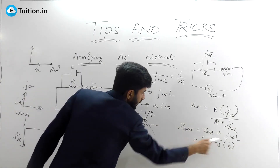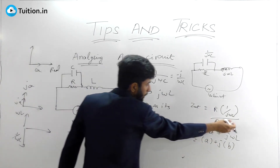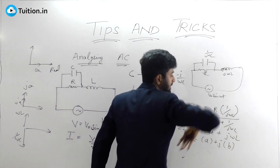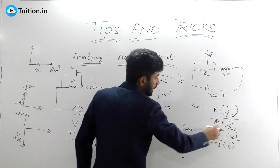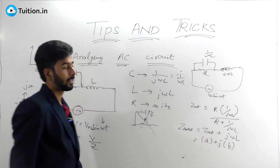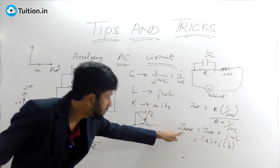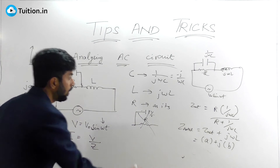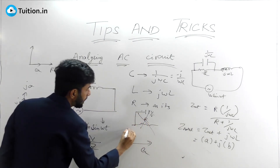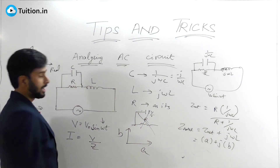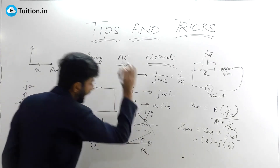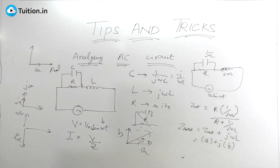Take the jωC term, cancel it, add jωL, and finally convert it into the form A + jB. That means your impedance is also a complex number — it has real component A and imaginary component B. This gives you the impedance angle theta.